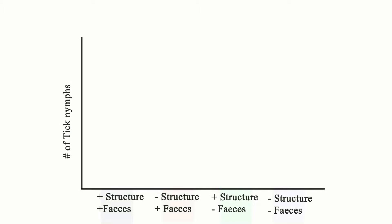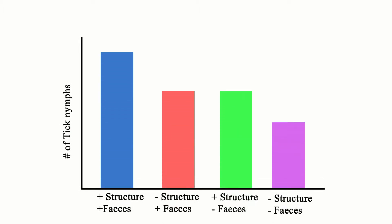On top of this expectation, we expect an interaction effect between the presence of feces and the presence of vertical structure. This compartment implies the presence of a host and the presence of cover for hosts, which were two essential features of our conceptual framework. Consequently, we expect the highest number of nymphs in the structure plus feces compartment.